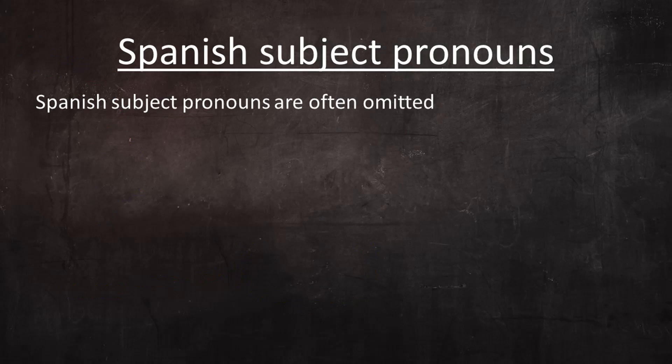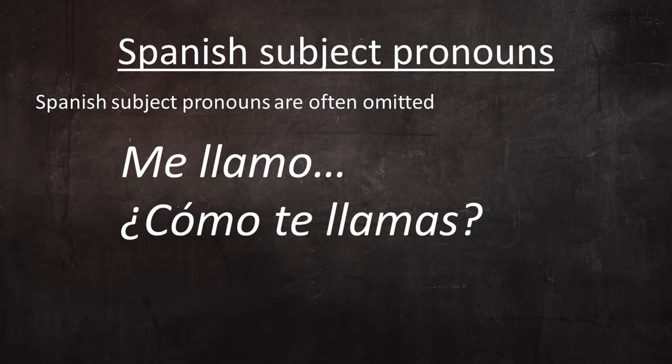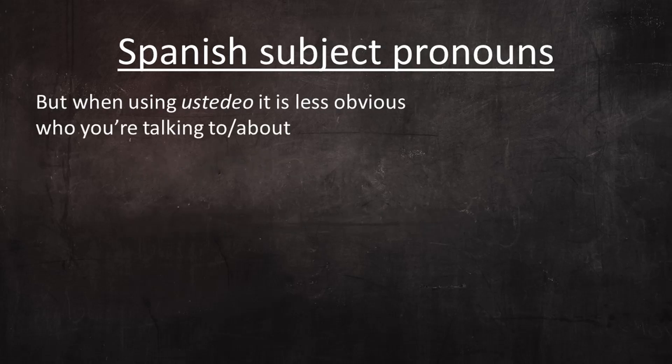We commonly teach that Spanish subject pronouns are often omitted because other grammar elements — especially verb conjugations — make them redundant. For example, it's common to say 'me llamo' rather than 'yo me llamo,' because the reflexive pronoun me and the verb conjugation make it obvious you're talking about yourself. Similarly, it's common to say '¿cómo te llamas?' rather than '¿cómo te llamas tú?' But when speaking to someone in ustedeo, the grammar elements are third person, making it less obvious that you're asking a question to someone rather than about someone else.